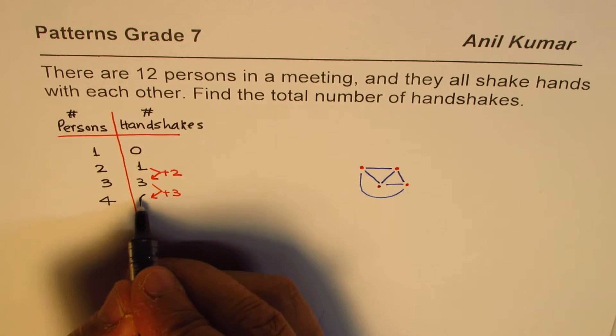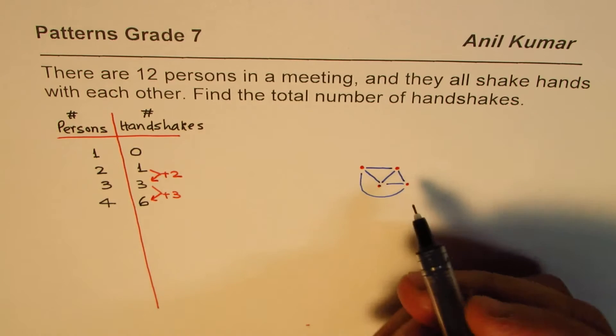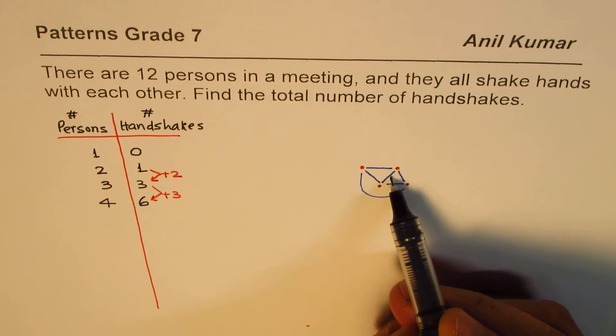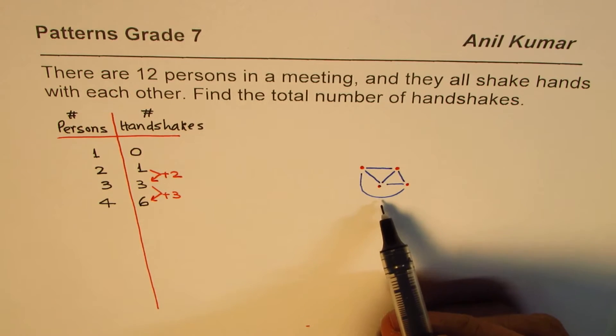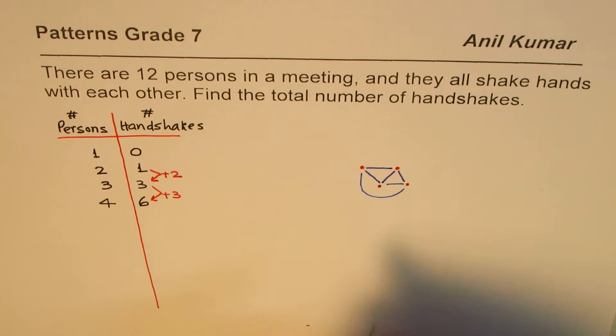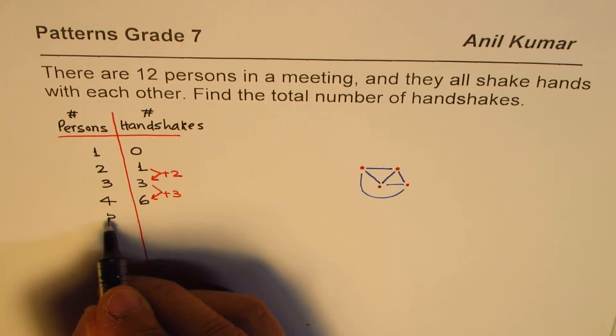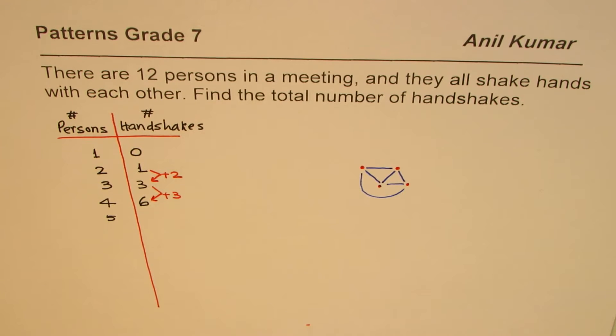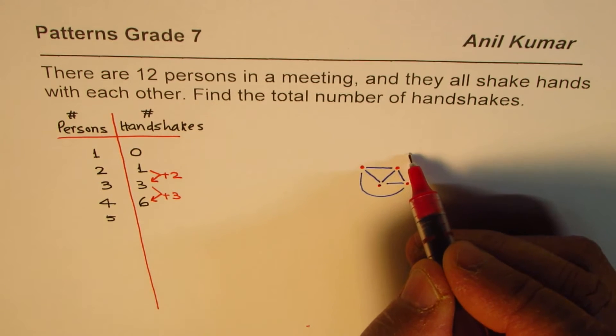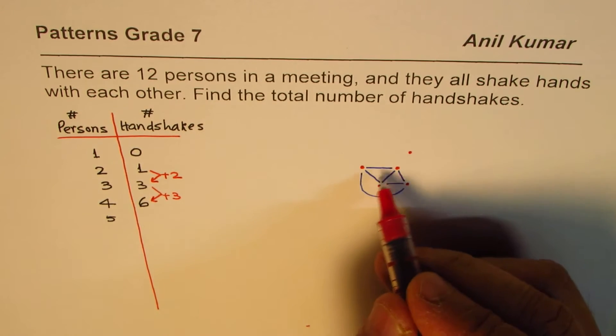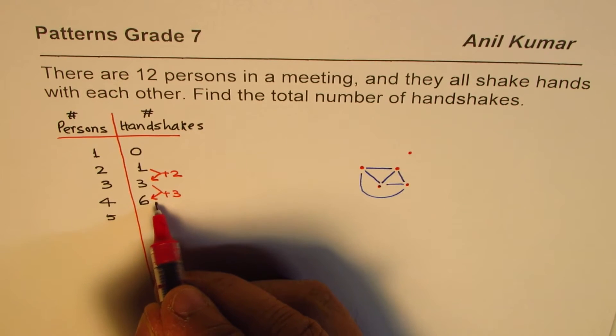You can also count these lines. Now there are 1, 2, 3, 4, 5, and 6. But as the numbers increase, it will be difficult for us to count those lines. Now let's add one more person to our list. In that case, it is this person who is going to shake hands with 1, 2, 3, 4 existing people.